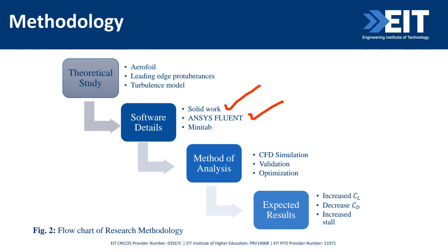Those are the three software we used. At EIT we explain all software in detail. We didn't have an optimization course earlier, but recently I spoke with our course coordinator Milind and we developed a new course on optimization. Optimization is a subject applicable in any engineering field. We will teach the basic theory of optimization and related software — it could be Mod Frontier, Minitab, or others. The method of analysis involves CFD simulation using ANSYS Fluent followed by validation to confirm our results are correct.